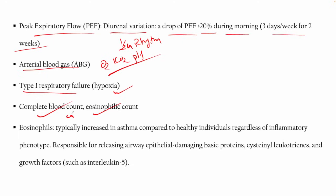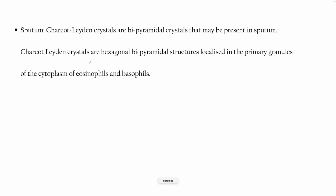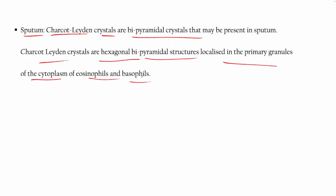CBC with eosinophil count — eosinophils are typically increased in asthma compared to healthy individuals regardless of the inflammatory phenotype, because they are responsible for airway epithelial damage via basic protein, cysteinyl leukotrienes, and growth factors. Eosinophils react to the inflammatory reaction, so you can go for an eosinophil count test.